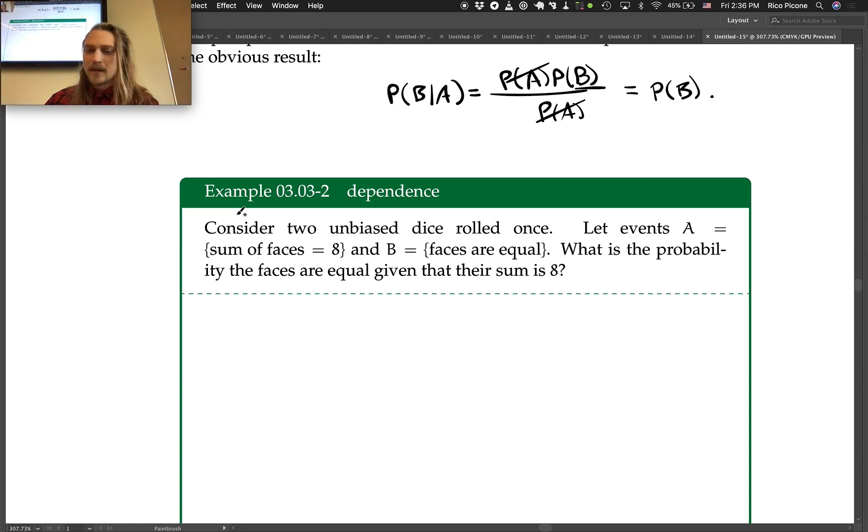Okay, so we're considering this example: Consider two unbiased dice rolled once. Let event A be the sum of faces equals 8, and B be the faces are equal. What is the probability...